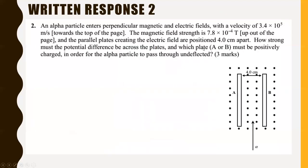Last question: written response 2. An alpha particle enters a perpendicular magnetic and electric field. The alpha particle passes through undeflected, which means all forces are balanced. Since there's both a magnetic and electric field, we can say immediately: the electric force equals the magnetic force, Fe equals Fm.